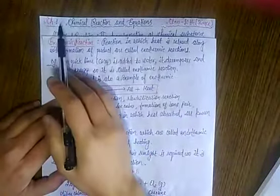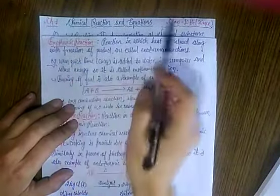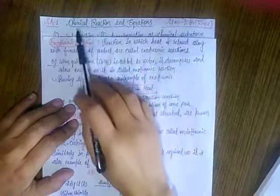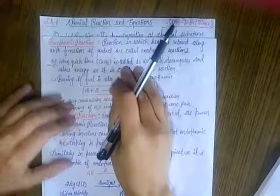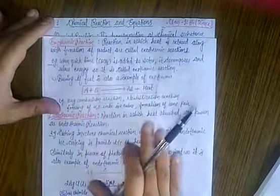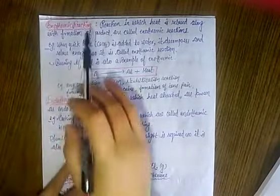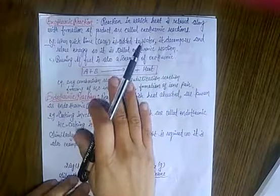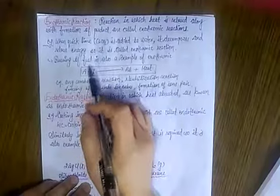Hello students. We are discussing chapter one of Class 10 Science. The name of the chapter is Chemical Reactions and Equations. In the previous class we talked about double displacement reactions. Today we will discuss exothermic reactions and endothermic reactions.